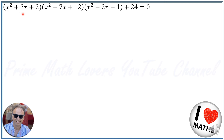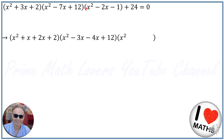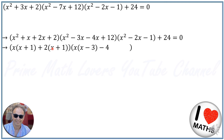I replace 3x with (x + 2x), and I replace -7x with (-3x - 4x), writing down the rest as the same. We can see that between the first two terms I can factor x, giving x(x+1); I factor 2 giving 2(x+1). Between the next two terms I factor x again: x(x-3), and between the last two I factor -4, giving -4(x-3). Then I write down the rest.